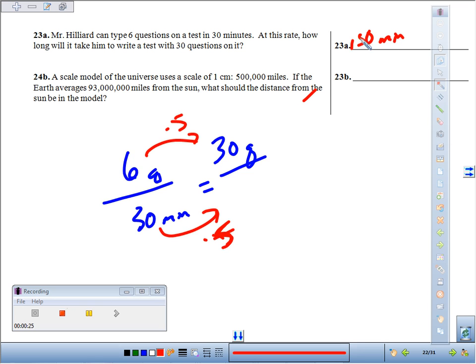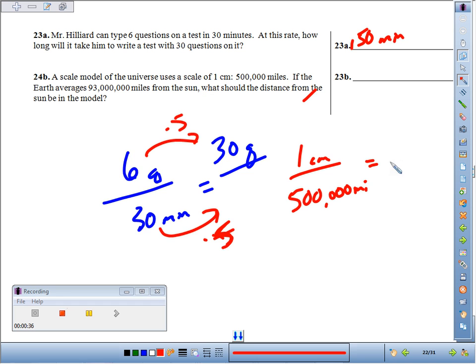A scale model of the universe uses a scale of one centimeter to 500,000 miles in reality. If the Earth averages 93 million miles from the sun, what's the distance in the model?